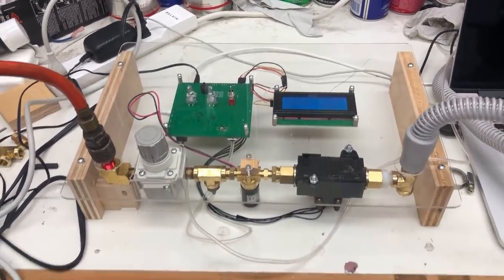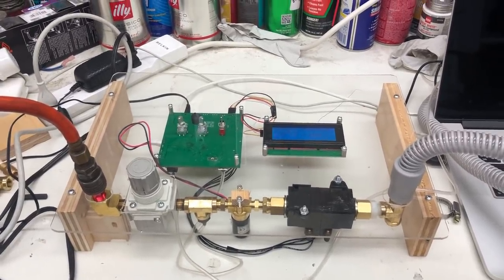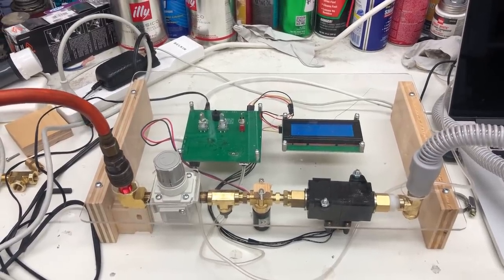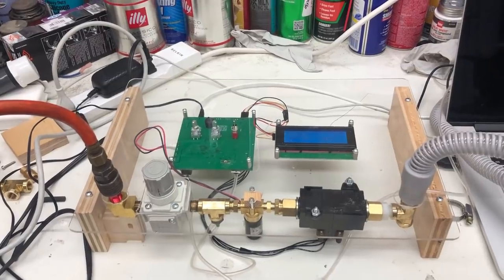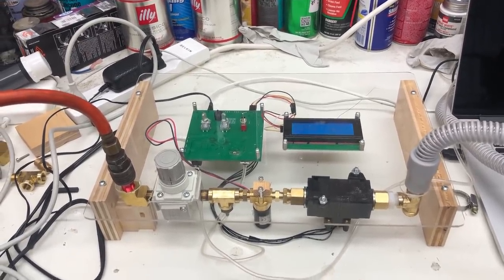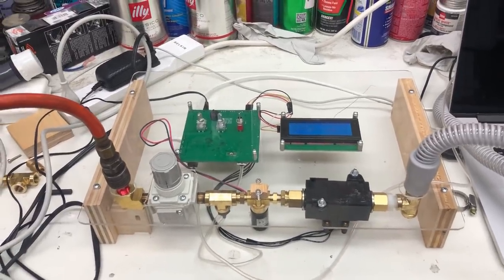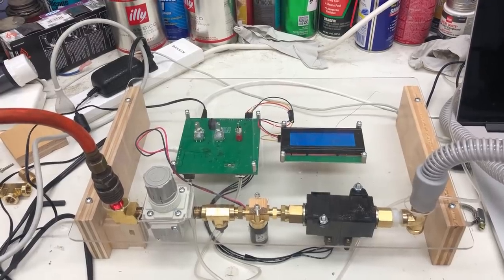The unit with off-the-shelf components that you're seeing here has a BOM cost with components in single unit quantities of under $400, and we expect that in quantity this will be under $300. Our open source components, where we make both the proportional solenoid valve and the flow meter through inexpensive injection molding of plastic parts, we expect to have a BOM cost under $100.